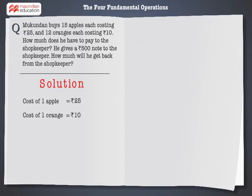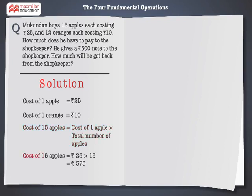Let's solve the problem. We know that the cost of one apple is rupees 25 and the cost of one orange is rupees 10. First, we have to find out the cost of 15 apples and 12 oranges. The cost of 15 apples is equal to the cost of one apple multiplied by the total number of apples.